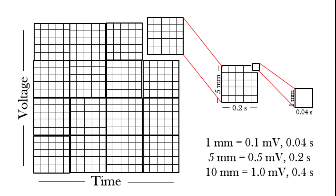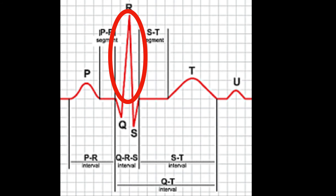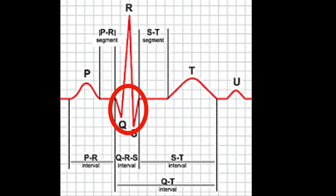What we're measuring vertically is amplitude — how much the waveform goes either above or below the baseline. That becomes very significant in 12-lead interpretation. When we refer to ECG waveforms, we're talking about any movement away from the isoelectric line. If it goes above that line, it's a positive deflection, showing electricity moving towards the electrode we're viewing from. If it moves below the line, it's called a negative deflection.